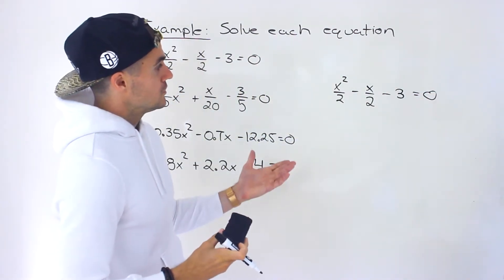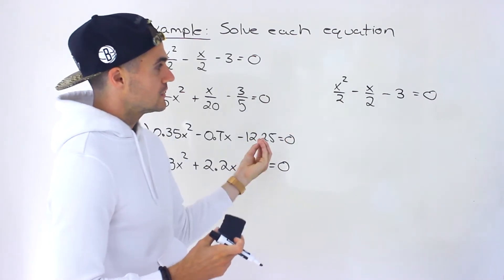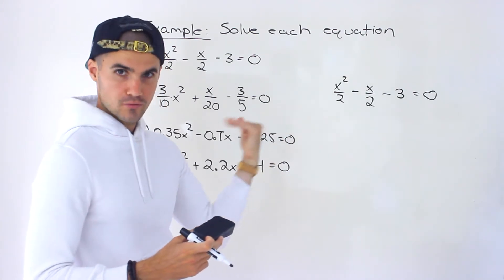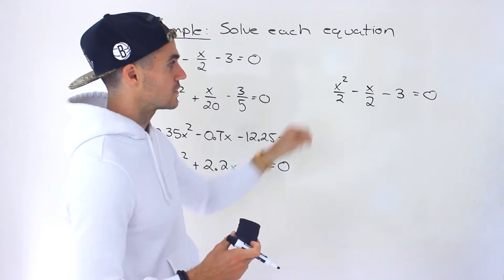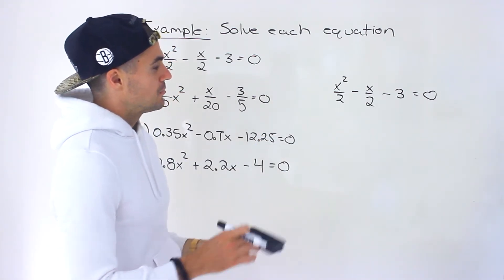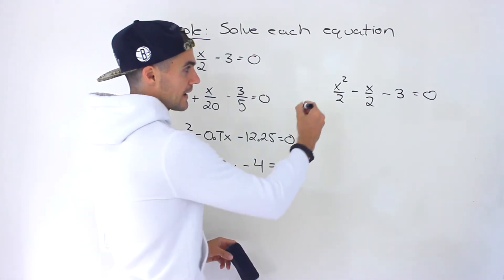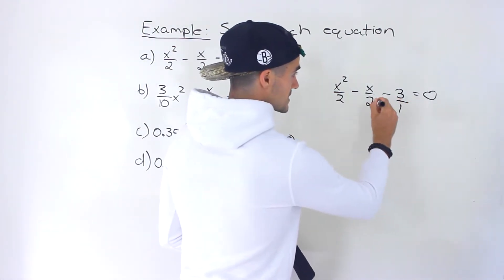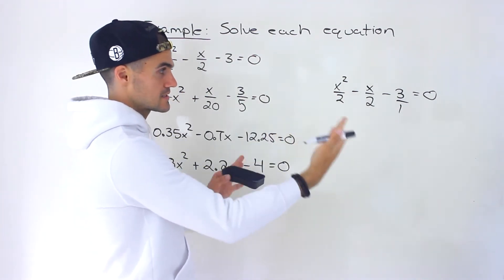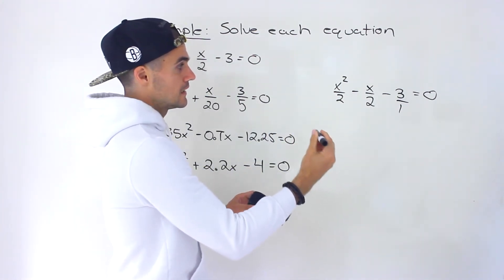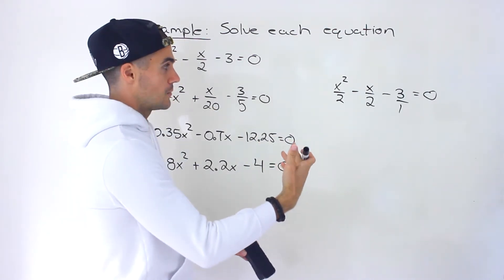One thing you could do is take this left side and try to factor it with the fractions — we've gone through examples where you can do that. But when you're dealing with an equation, what I actually recommend is multiplying everything on both the left side and the right side, because remember, what you multiply on one side you have to multiply on the other side since it's an equation.